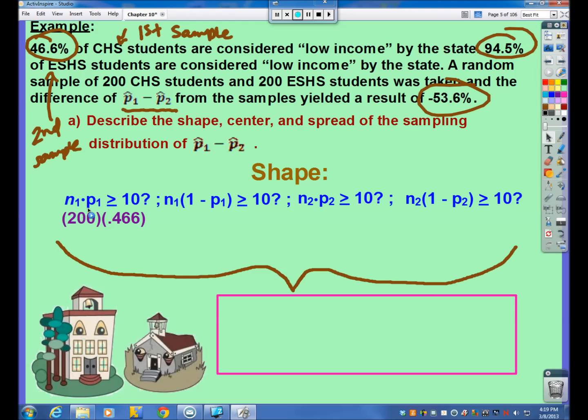So, then we test each one. For the first one, keep in mind our first sample is CHS students. So, N, and really all four of these cases, will be 200 because we have the same sample size. And then P1 is our population proportion. This is for all CHS students. It's 0.466. Now, I didn't tell you what the sample proportion was that we got from our 200 students because it's irrelevant. We don't really need to know that specific number. Now, these two numbers multiplied together is 93.2, which is greater than or equal to 10. And then if I take 200 times 1 minus 0.466, I get 106.8, which is greater than or equal to 10.